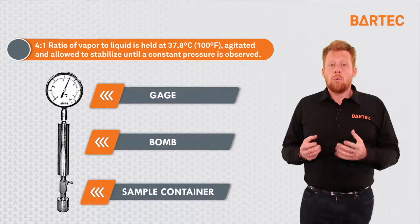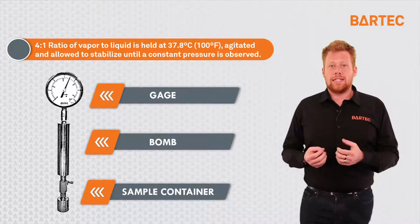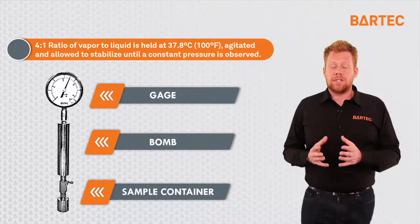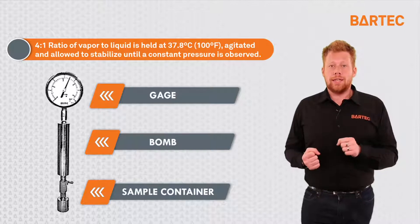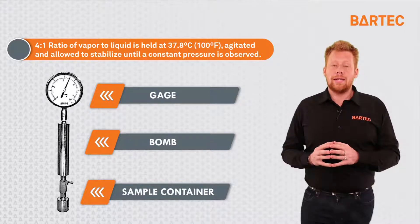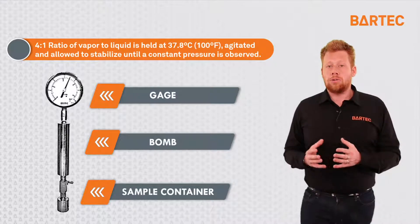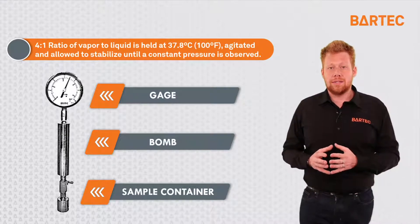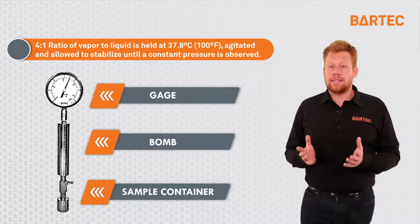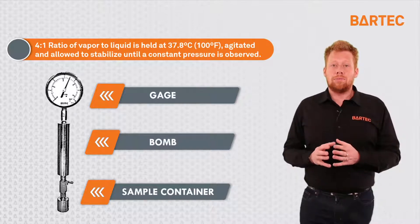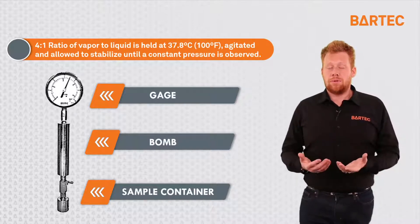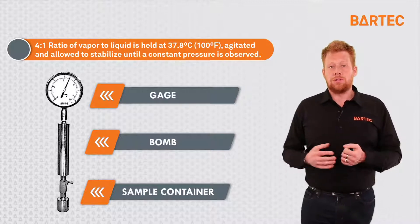Once the sample is exposed to the bomb where the vapors can get released, we will shake, agitate, and let the apparatus rest at a constant temperature of 100 degrees Fahrenheit or 37.8 degrees Celsius until the pressure gauge stabilizes. That stable pressure value is the vapor pressure of the sample at 100 degrees Fahrenheit.